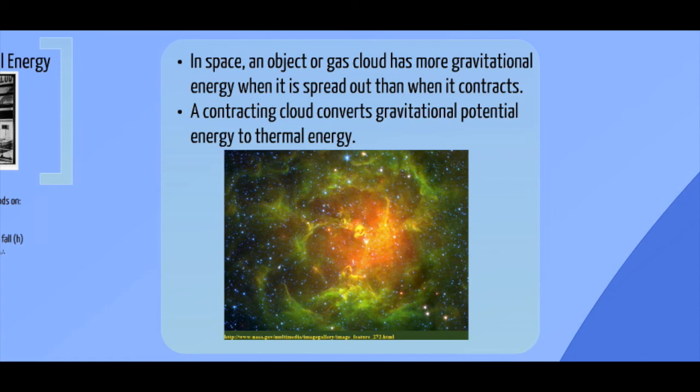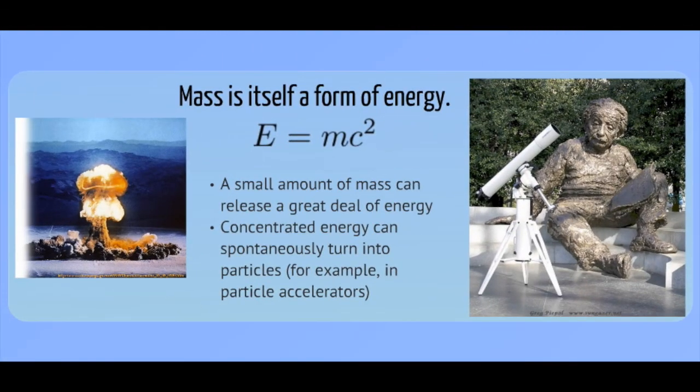So Einstein told us back in 1904, 1906, that mass itself is also a form of energy. Probably the most famous equation in the world, E equals mc squared. C is a constant, it is the speed of light, and so it is approximately 3 times 10 to the 8 meters per second. So c squared is approximately 9 times 10 to the 16 meters per second. So a very, very small amount of mass, if it's converted entirely into energy, it produces an enormous amount of energy. So we can use this energy to run nuclear power generators. We have it in our particle accelerators, and of course in our atomic weapons.